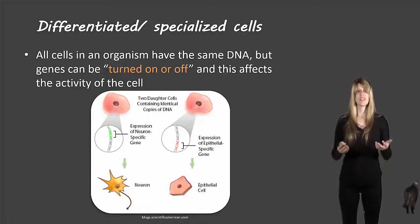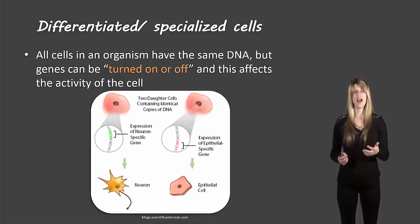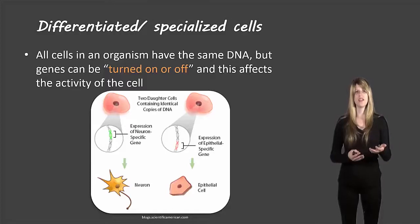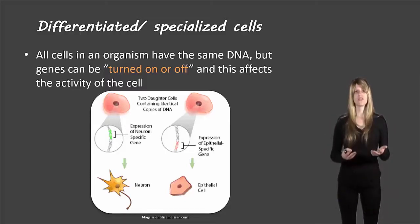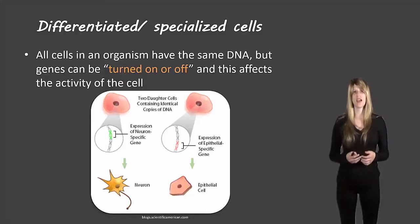What happens is inside the DNA, it's actually chopped into little bits called genes. The genes control what the cell looks like and how the cell acts. Each of these independent genes can be turned on or turned off. If a certain gene for becoming a neuron is turned on, that cell will become a neuron, like on the left side of the picture. If a certain gene to become an epithelial cell is turned on, the cell will become an epithelial cell like the one on the right side of the picture.